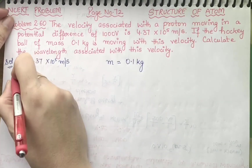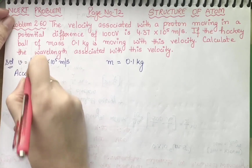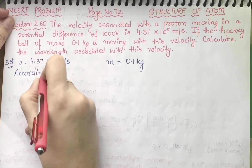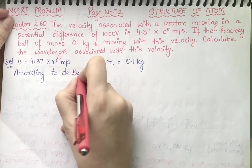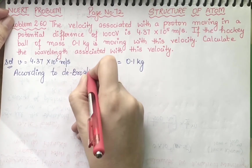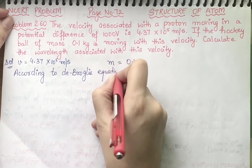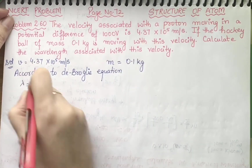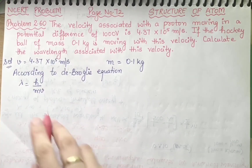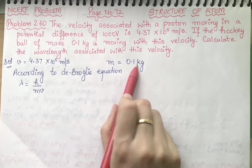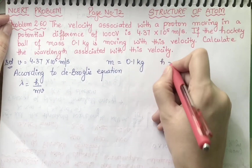We can put these values in the de Broglie equation. According to de Broglie, lambda is equal to h upon mv. Lambda we have to find out; mass is given and velocity is given. Now Planck's constant — you can see it is 6.626 into 10 raise to power minus 34 joule second.